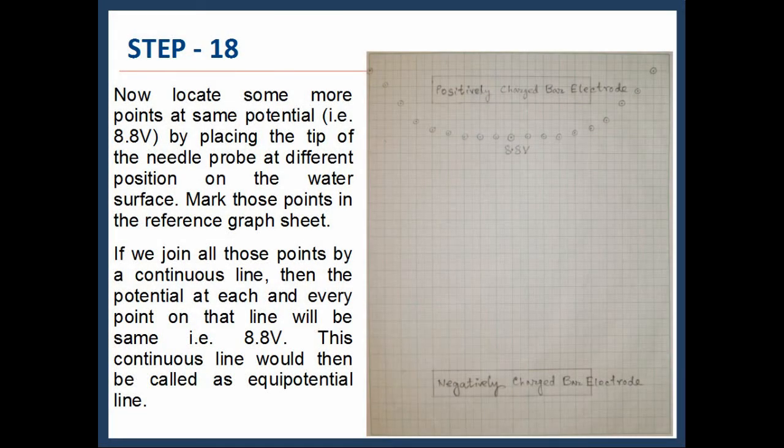Now locate some more points at same potential, that is 8.8 volts, by placing the tip of the needle probe at different positions on the water surface. Mark those points in the reference graph sheet.